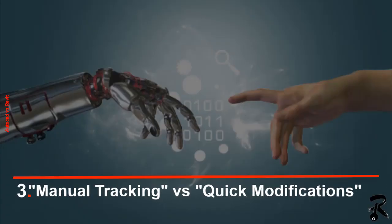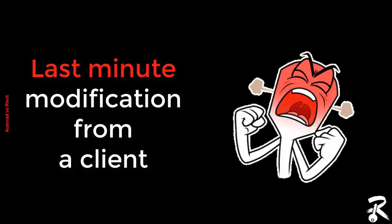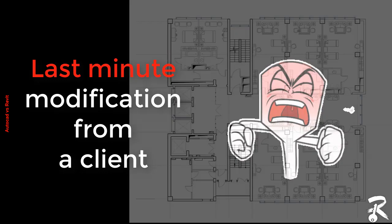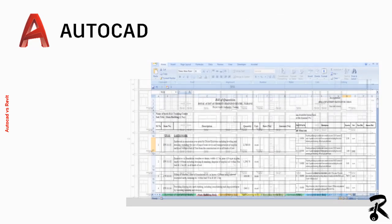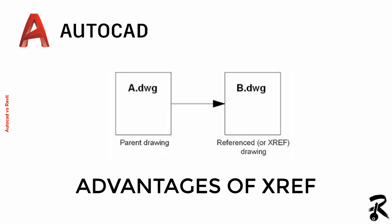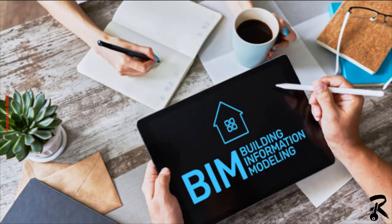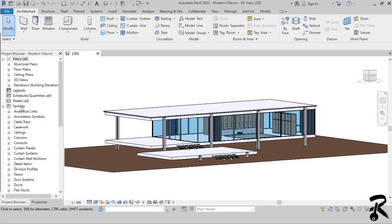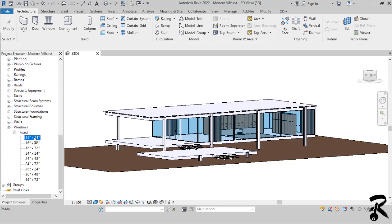Number three: manual tracking versus quick modifications. You know the feeling — a last-minute modification from a client, and suddenly you're running from plan to elevation to section, asking where that window appeared elsewhere, and realizing you forgot the schedule. It's almost entirely manual and time-consuming in AutoCAD. Of course there are advantages to external references or xrefs, but this is nothing compared to the power of BIM. In Revit, you just browse the properties, change the width, and the adjustment is incorporated into every single view — avoiding the dreaded last-minute discrepancies.